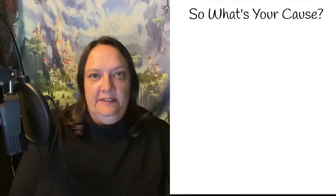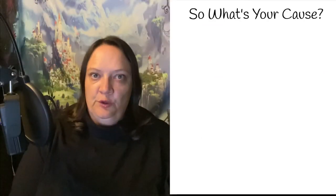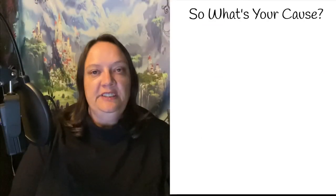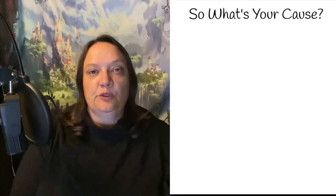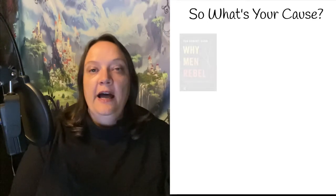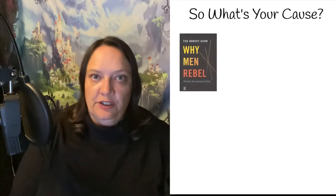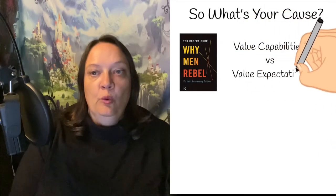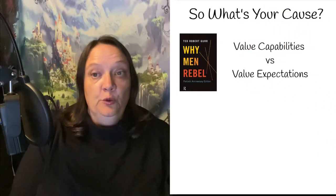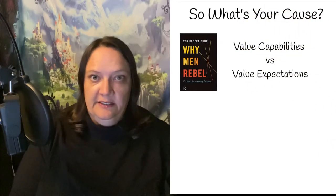So why do rebellions happen? Ted Gurr has a very interesting model where he states that a rebellion is the result of value expectation mismatching with value capabilities.